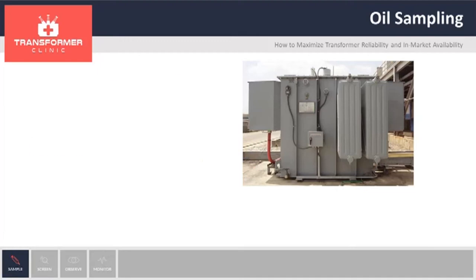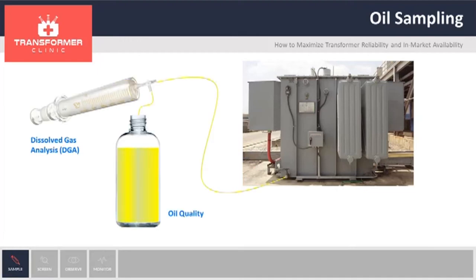The other tests are dissolved gas analysis and oil quality. For oil quality, we use standard C57-104, and for DGA, we also use C57-104.